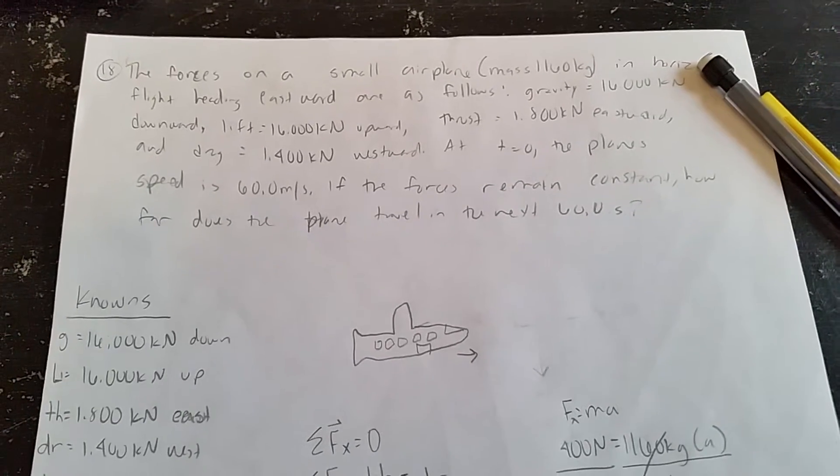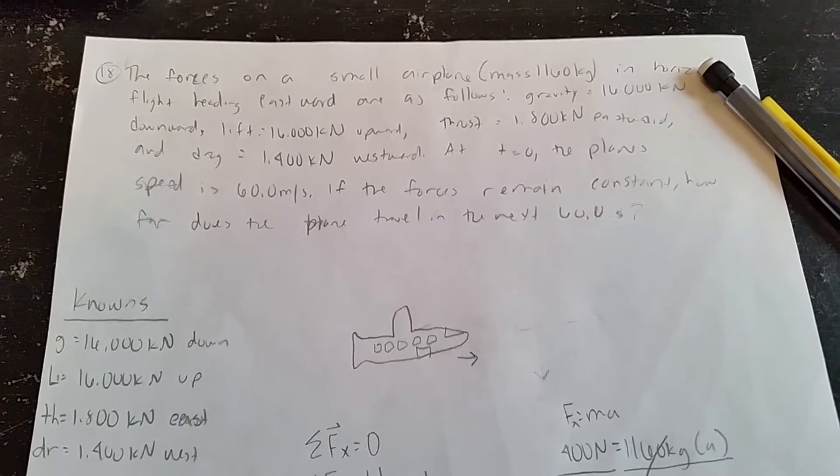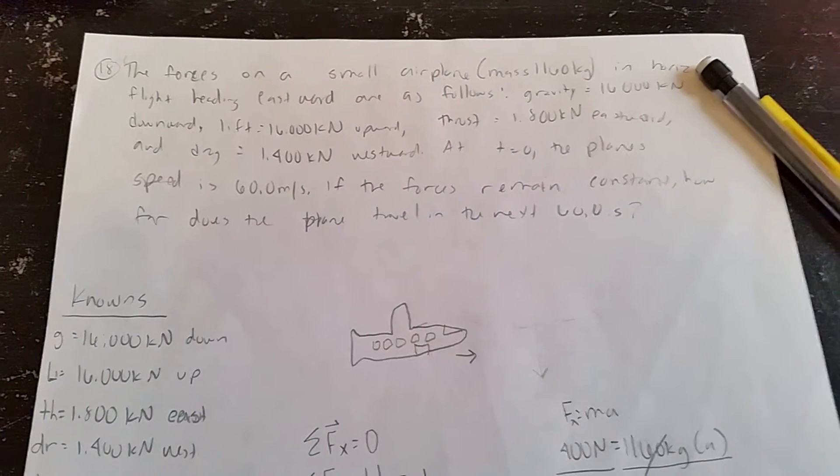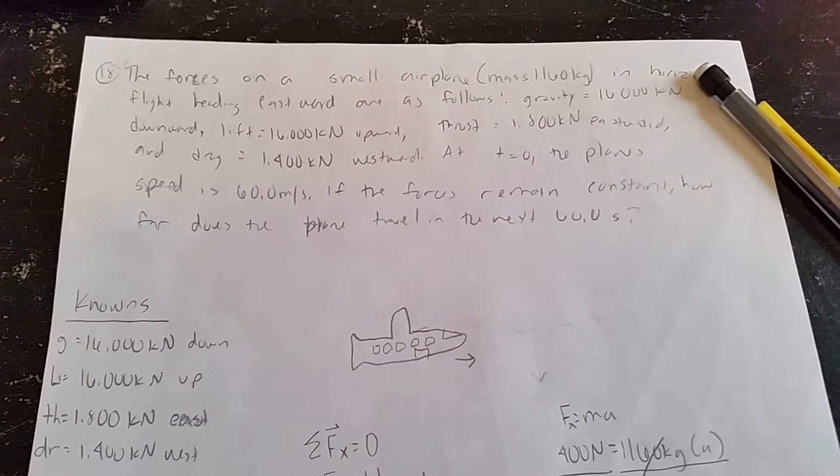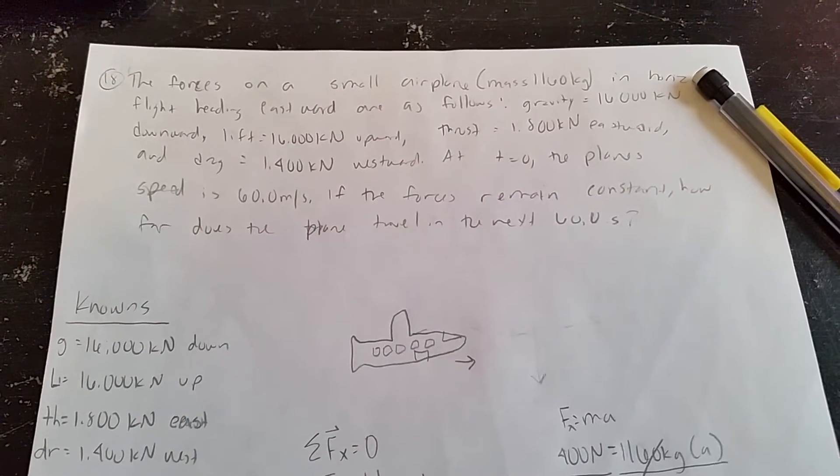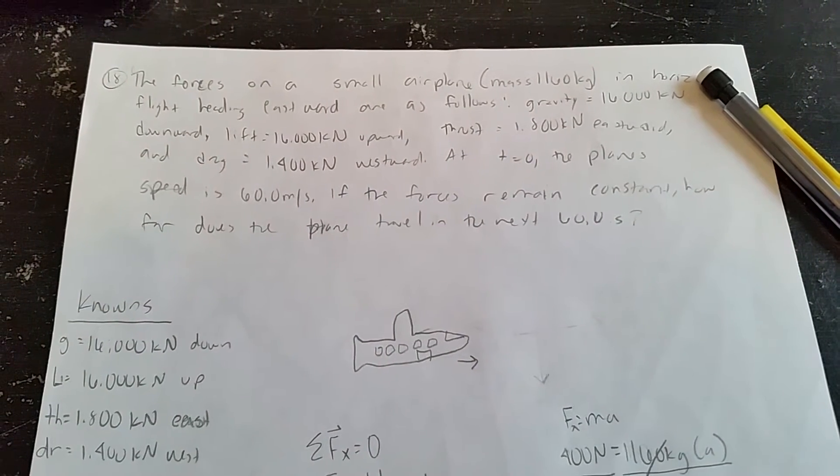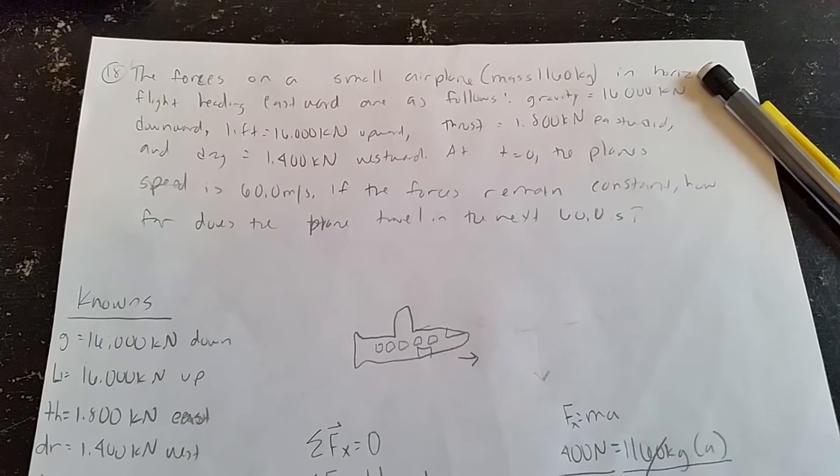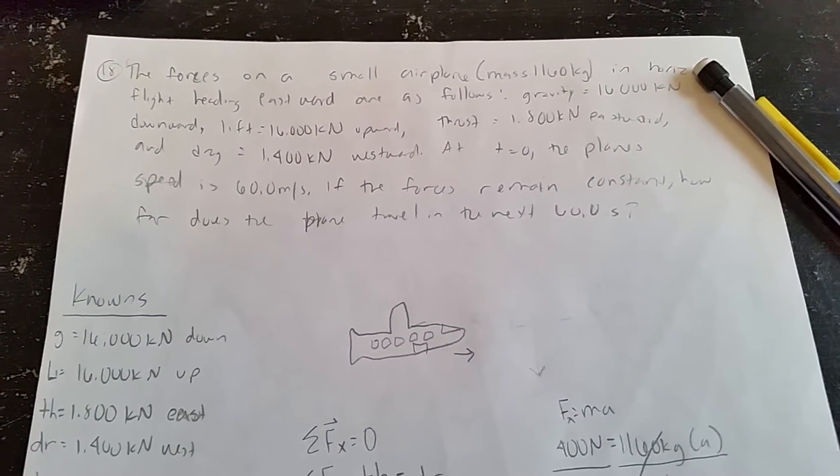This is my second attempt at reassessment on kinematics. I chose question 18 from the book and the question asks, the forces on a small airplane with a mass of 1,160 kilograms in horizontal flight heading eastward are as followed.